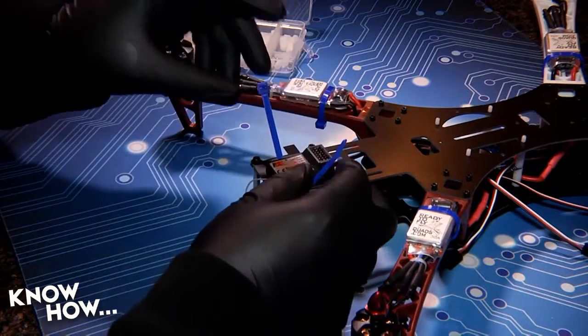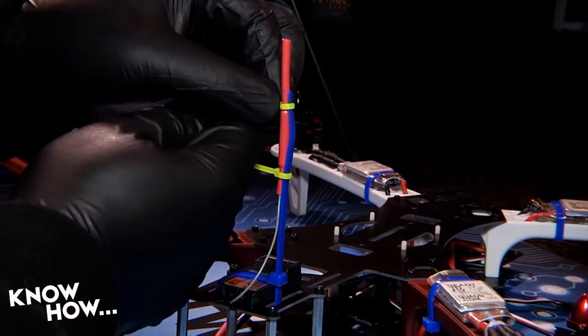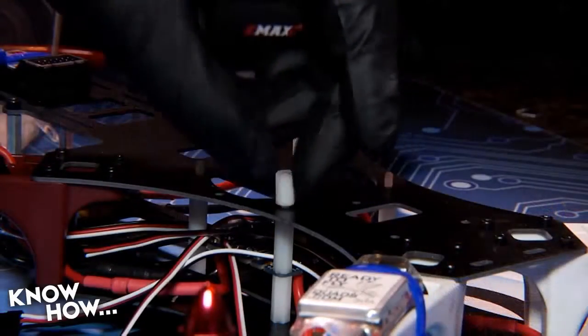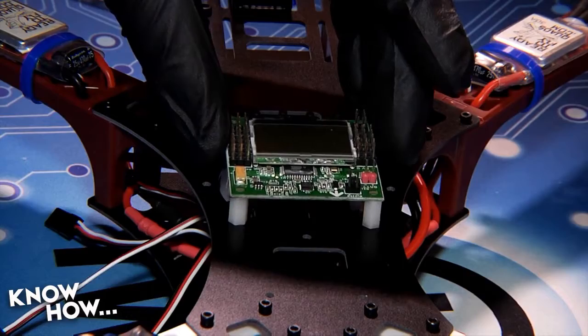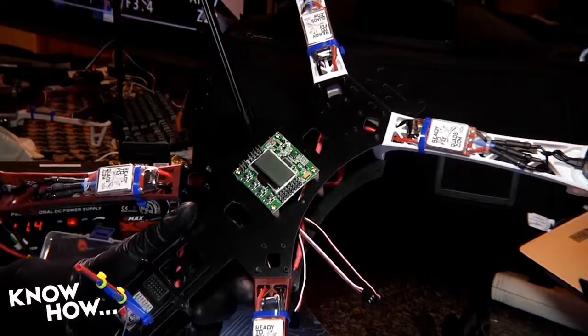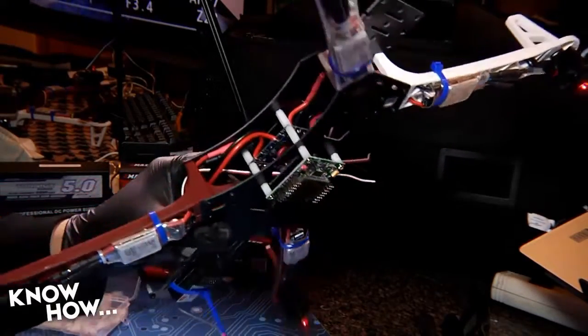Zip-tie your receiver to the tail and use the excess zip-tie length to secure the receiver's antenna. Using more nylon spacers, mount the flight controller on the top deck directly above the power distribution board. This is the center of gravity for your craft.